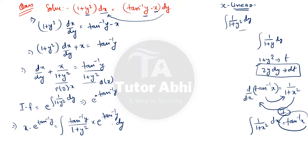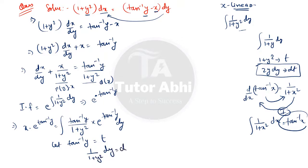To solve this integral, we use substitution. Let t = tan⁻¹y, then differentiating: 1/(1 + y²) dy = dt. We can now replace tan⁻¹y with t and 1/(1 + y²)dy with dt, simplifying the integral to ∫ t · eᵗ dt.